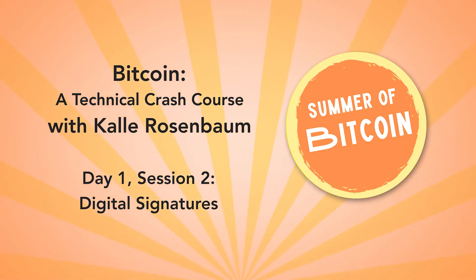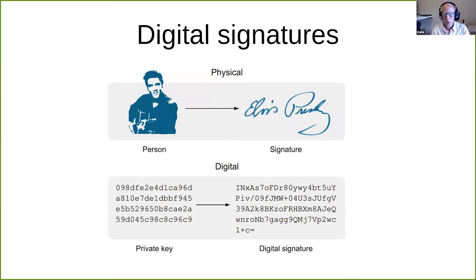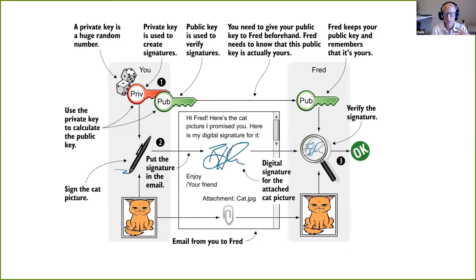Now it's time to talk about digital signatures. In the physical world we have signatures — for example, a person has a certain signature to sign stuff with. In the digital realm, you don't have persons but you have private keys that can produce digital signatures for a certain message. I will show you first an overall picture of the digital signature process. There are three separate processes for digital signatures.